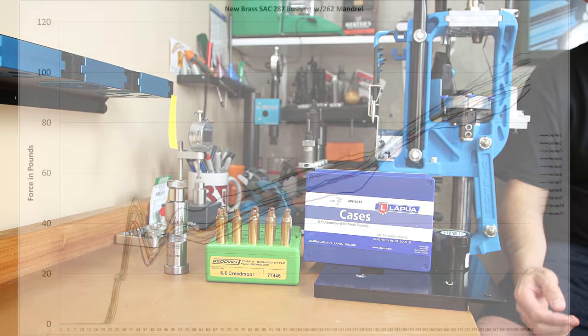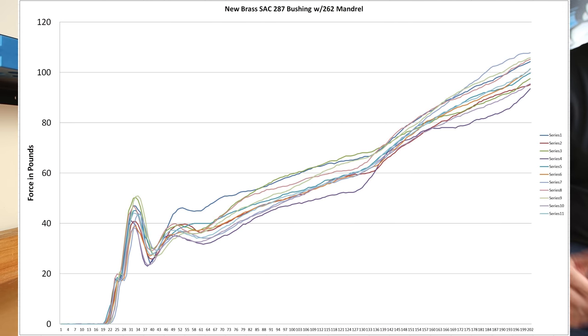Now onto option seven. Using that same Short Action Customs 287 bushing, we chased those with a 262 mandrel. Very interesting to me that it certainly appeared that adding the 262 mandrel to this step increased the amount of force it takes to start our projectile at least a little bit for this process. But we can see by adding the mandrel, it really decreased the variation from case to case. It doesn't look quite as consistent as our full length graph, but certainly much improved over just the bushing only.